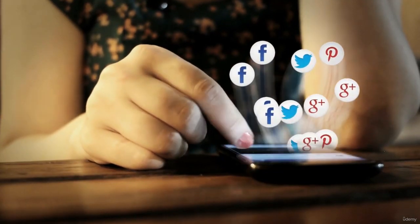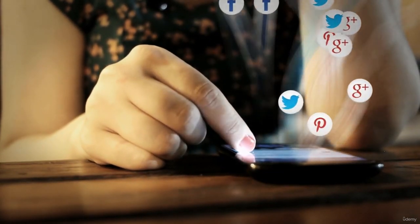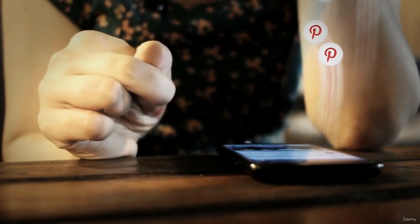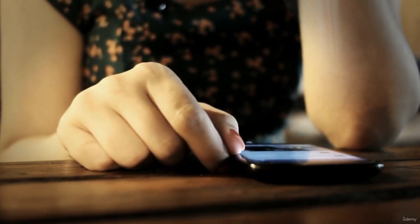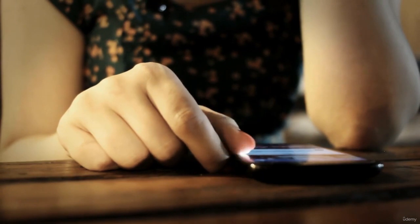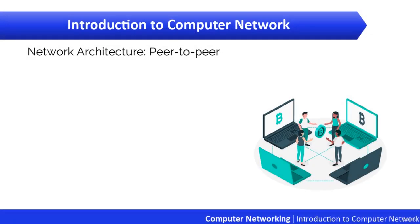We have developed networking as a way to share resources and information, and how that's achieved directly maps to the particular architecture of the networking operating systems we have been using. In this lecture we are going to talk about the most common known application architecture, that is peer-to-peer architecture. There are two main network types: the first one is peer-to-peer and the second one is client-server, which we're going to see in the next lecture.